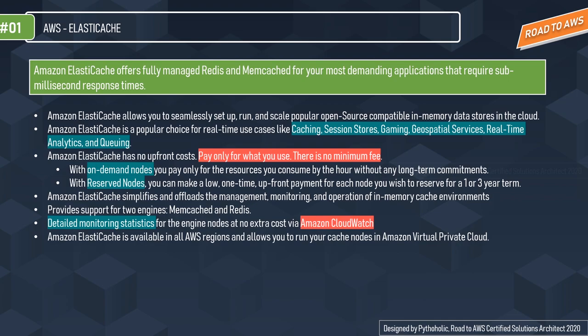The most important aspect of using ElastiCache is that it boosts the performance of your existing databases by retrieving data from high-throughput and low-latency in-memory data stores. You can use it for caching, session stores, gaming, geospatial services, real-time analytics, and queuing. As an in-memory database, it gives you sub-millisecond response time — that's less than a millisecond, and a millisecond is a thousandth of a second. So it's very, very fast.